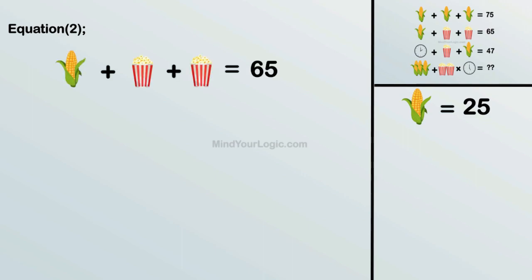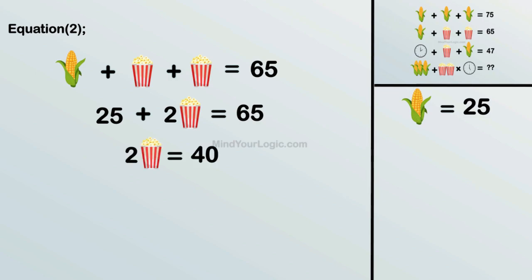Now equation 2. Corn plus popcorn plus popcorn equals 65. Substituting the values, we get popcorn equals 20.